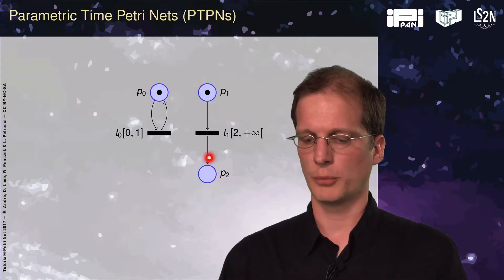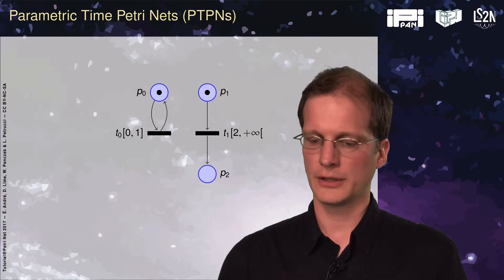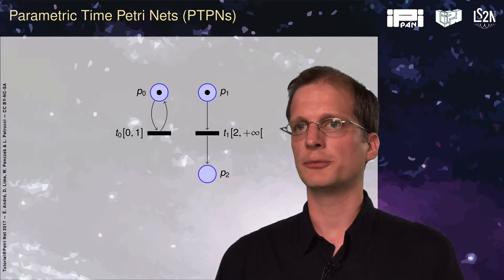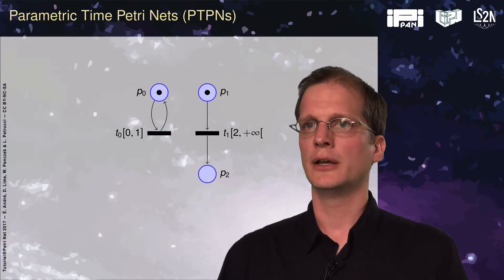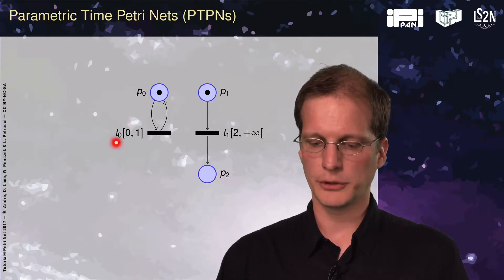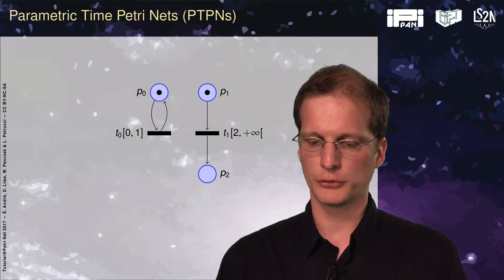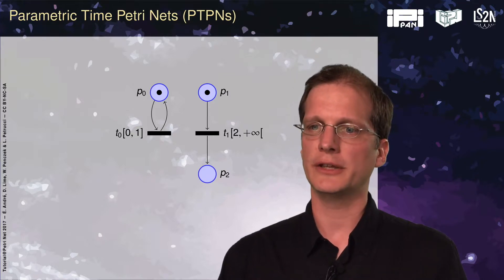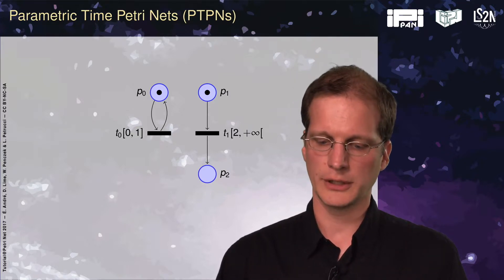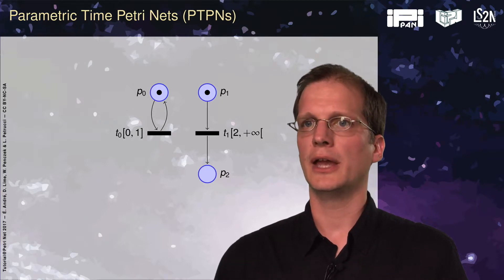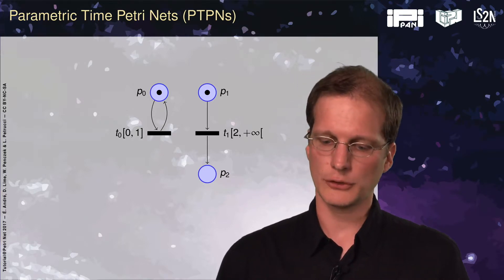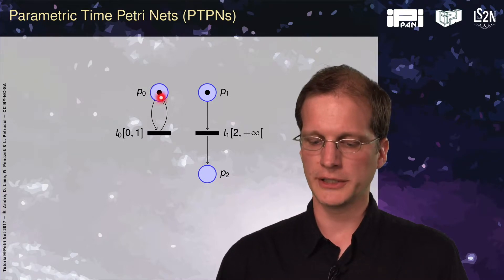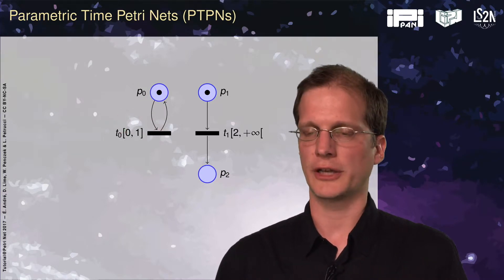We have normal Petri nets where transitions are annotated with intervals that specify how long the transition should be enabled to be able to fire. We can now distinguish between enabledness — having enough tokens in the input places — and fireability, where the transition is enabled and has also been enabled for a sufficiently long time.